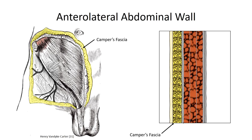Just deep to Camper's fascia is Scarpa's fascia. Unlike Camper's fascia, Scarpa's fascia is composed of dense irregular connective tissue and is therefore more consistent in its thickness. It serves as an anchor between Camper's fascia and the underlying musculature, acting somewhat like elastic wallpaper paste.